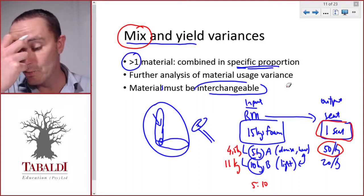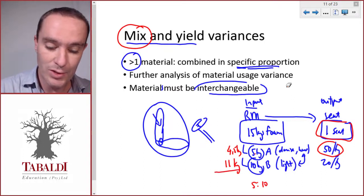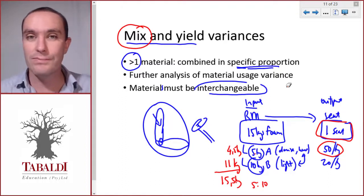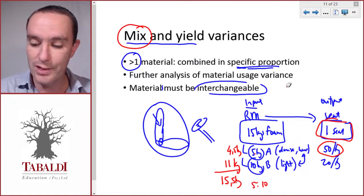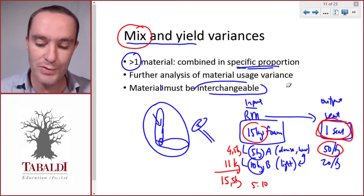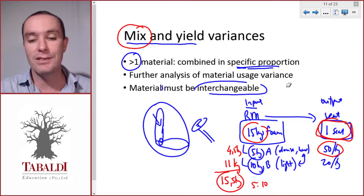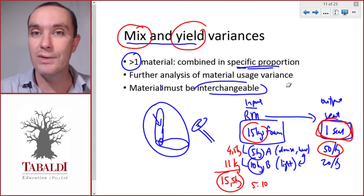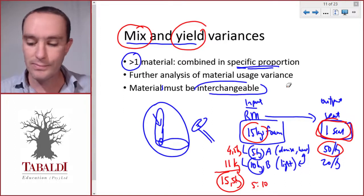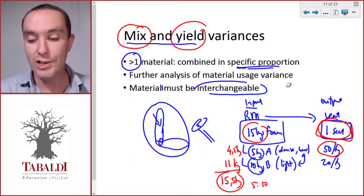What that could do is, since we had to use more of foam type B and less of foam type A, in total we used 15.5 kilograms of foam. We actually used more than we should have to make one seat. Remember, we should have used 15 kilograms of foam whether it's A or B, and we used 15.5 as a result of changing the mix. That means our yield has also changed - we put more input in to get the same output, so we will have a usage variance.